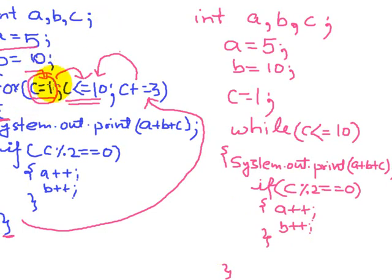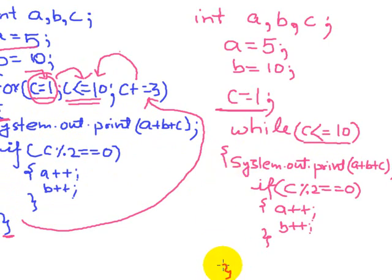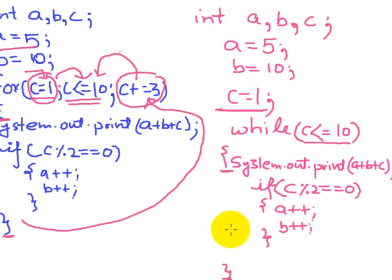The initialization of the variables is done prior to the while loop with the help of this statement. The testing expression is given along with the while loop — that is c is less than or equal to 10. All the statements which were part of the for loop are put under the body of the while loop. Now we are left with the updation part — that is c plus equals to 3 — which will be put within the body of the while loop. This is an arithmetic assignment operator.